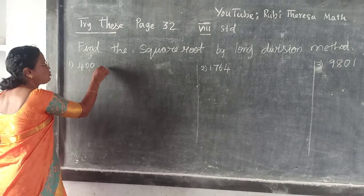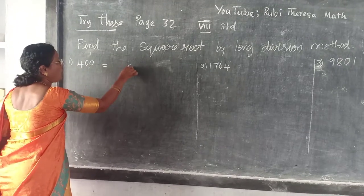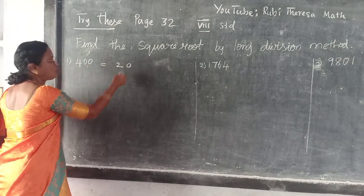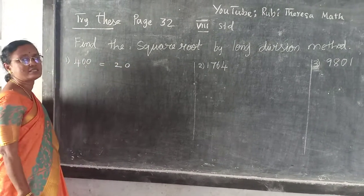For this: 2, 0 — 1, 0. For this 4 — 2. So 20 is the answer.